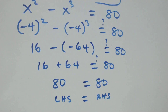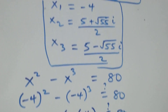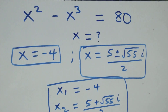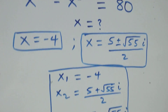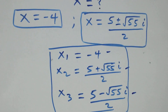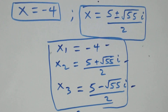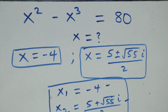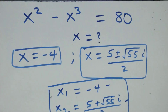We conclude that minus 4 satisfies this given problem, and in the same way the two complex solutions will also satisfy it. Thank you for watching. Don't forget to subscribe for more videos, turn on your notification bell, share this video, give a thumbs up, and put your comments. See you in the next class.